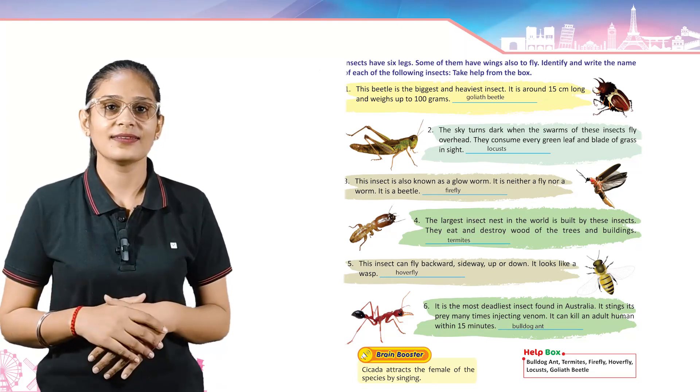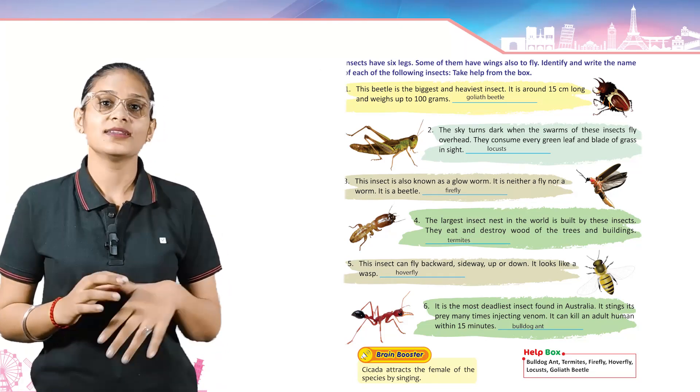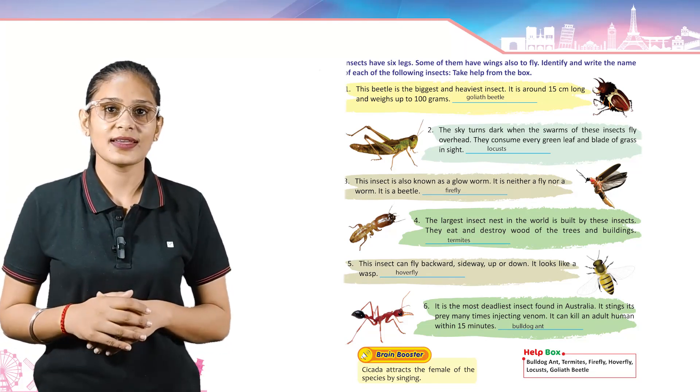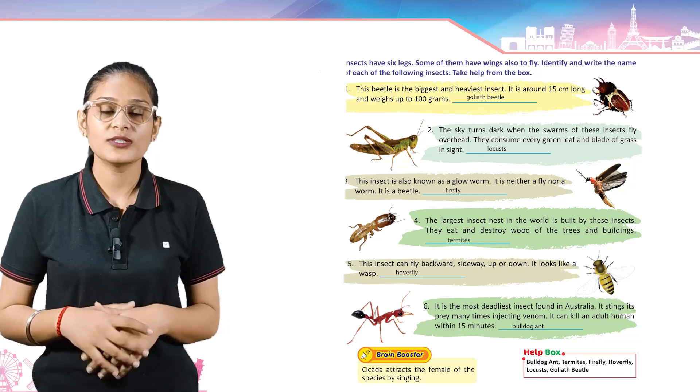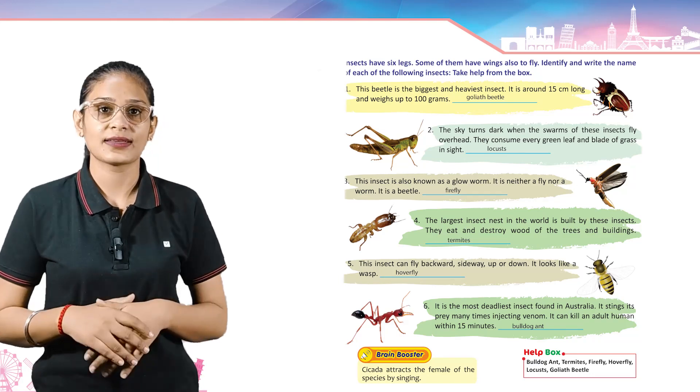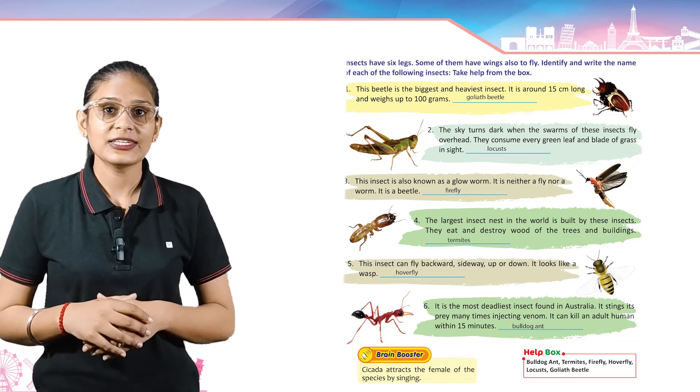Come to the next. This insect is also known as a glow worm. It is neither a fly nor a worm — it is a beetle. Its answer is Firefly.